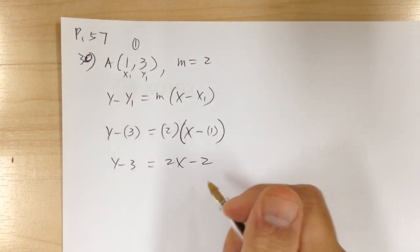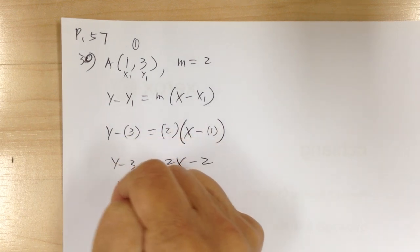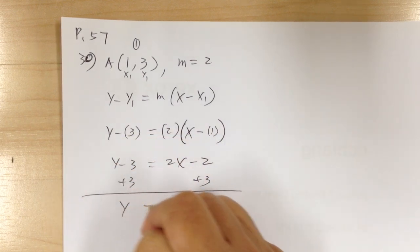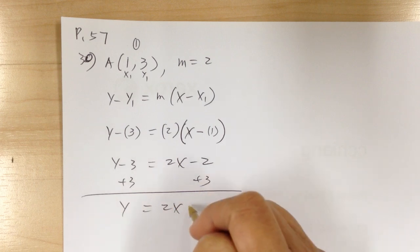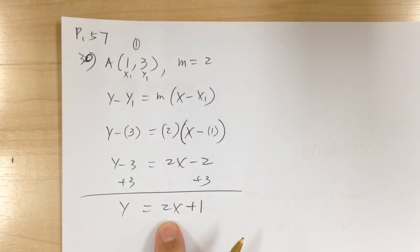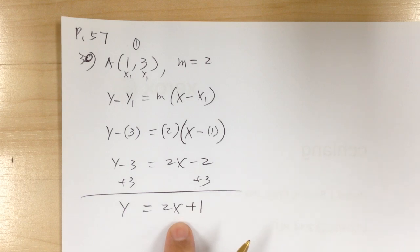Adding 3 to both sides gives y equals 2x plus 1, which is the slope-intercept form. It doesn't ask for any particular form, so you can leave it in any of the recognized forms.